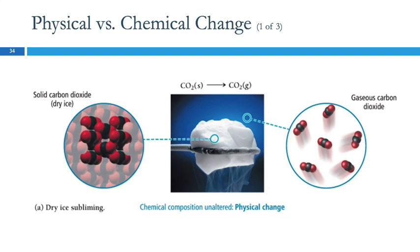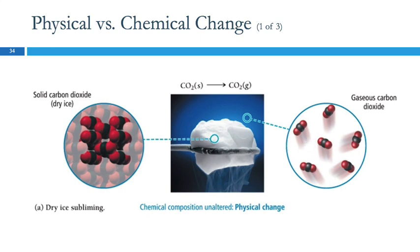Here we have dry ice — solid carbon dioxide. Dry ice looks kind of like regular ice, but why do we call it dry? It doesn't melt. Regular ice, when it melts, gets wet. Dry ice doesn't do that. Dry ice goes straight from the solid state to the gas state — we'll talk about how that happens later. Are the particles changing? No, they are still carbon dioxide molecules. It's just changed physical state, so it's a physical change.